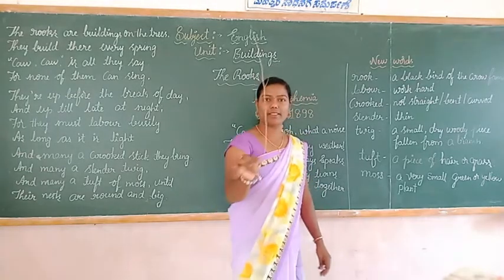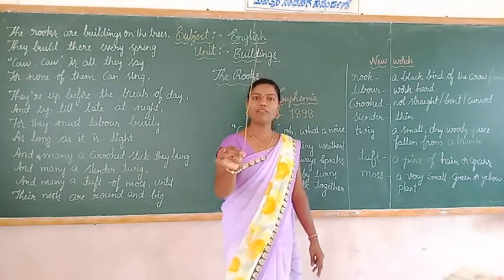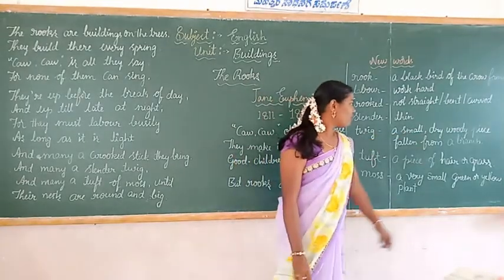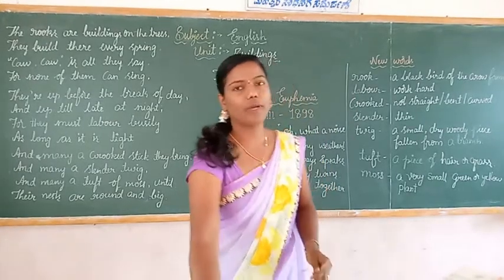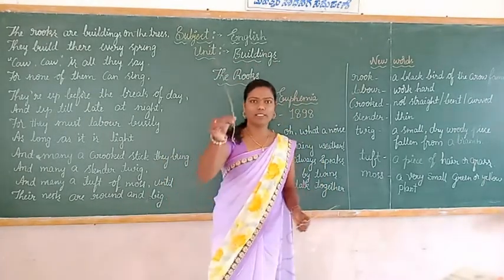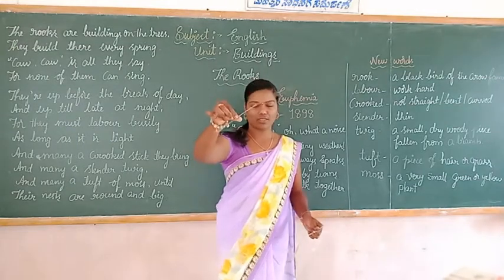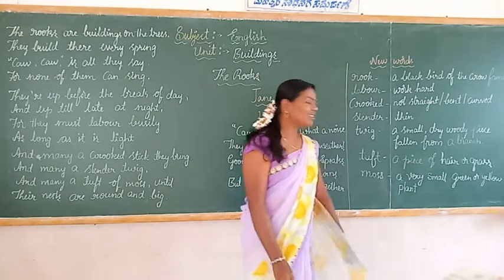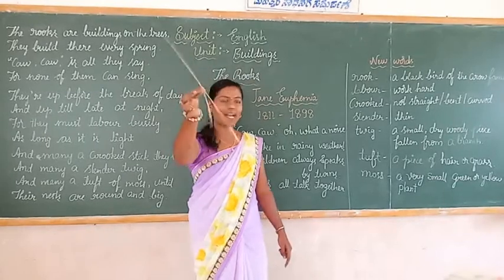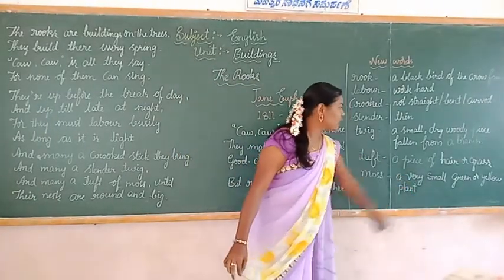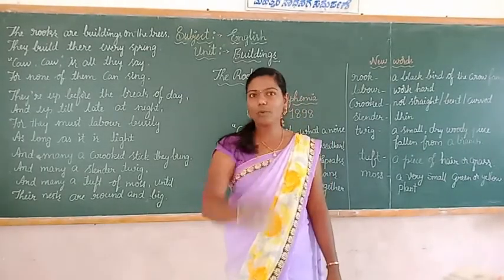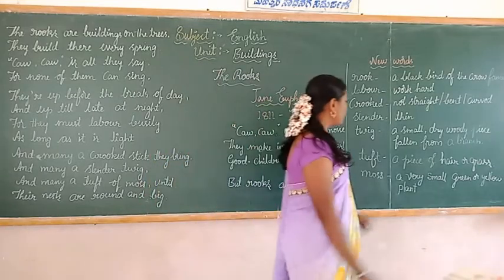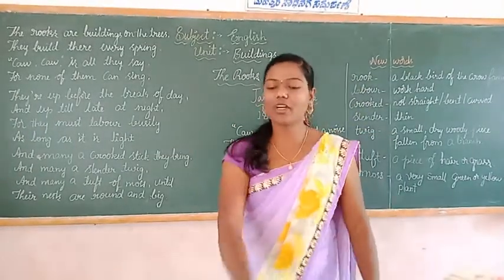Next word: slender — that means thin, like this type of woody piece. Next word: twig — a small dry woody piece fallen from the branches. It is a small type of woody piece fallen from the branches. Next word: tuft — that means a piece of hair or grass, like this. Next word: moss — a very small green or yellow plant. It is a very small green or yellow plant.